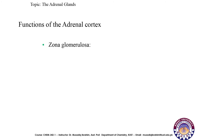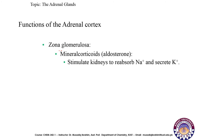The functions of the adrenal cortex are divided by region. The zona glomerulosa secretes mineralocorticoids — the example is aldosterone. The function of aldosterone is to stimulate the kidney to reabsorb sodium ions and secrete potassium ions. This is a very important function: it allows the kidney to reabsorb sodium so it is not secreted into the urine, and to secrete potassium ions into the urine.